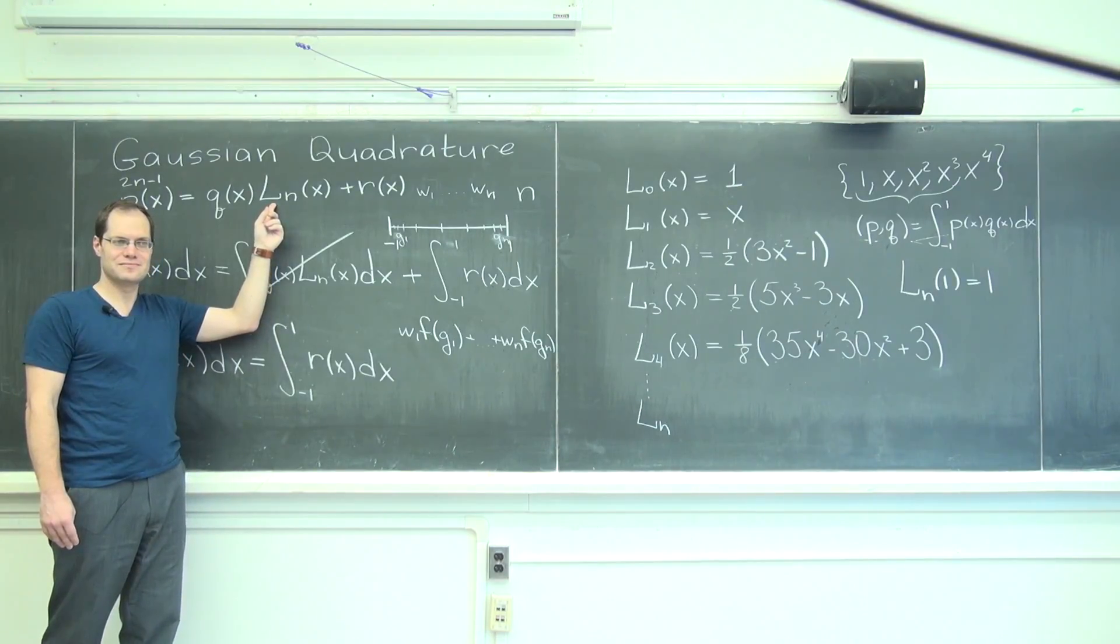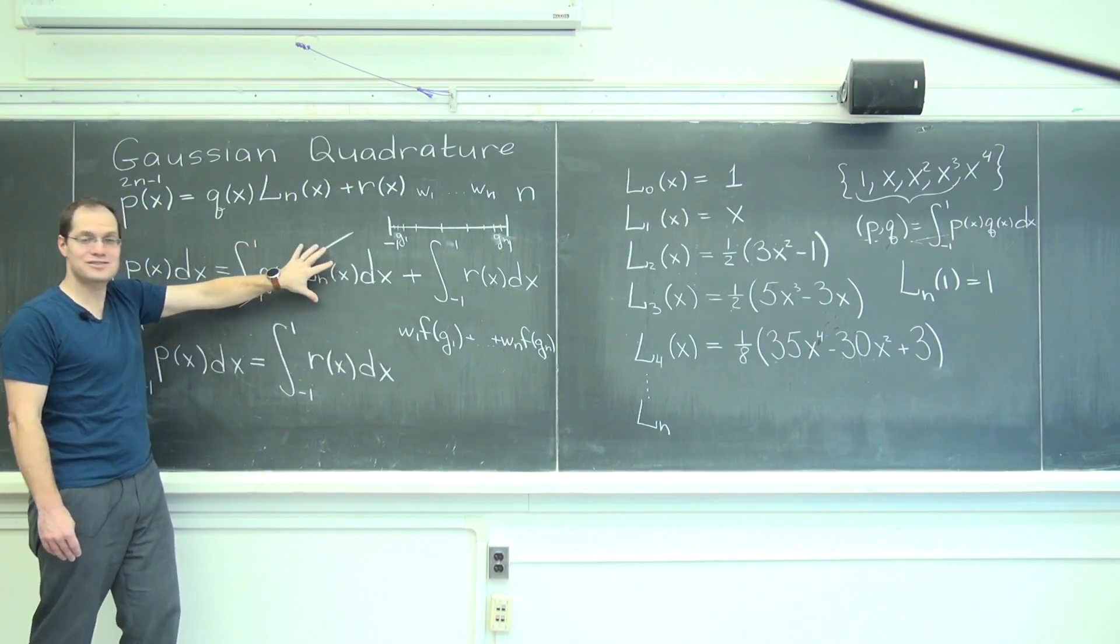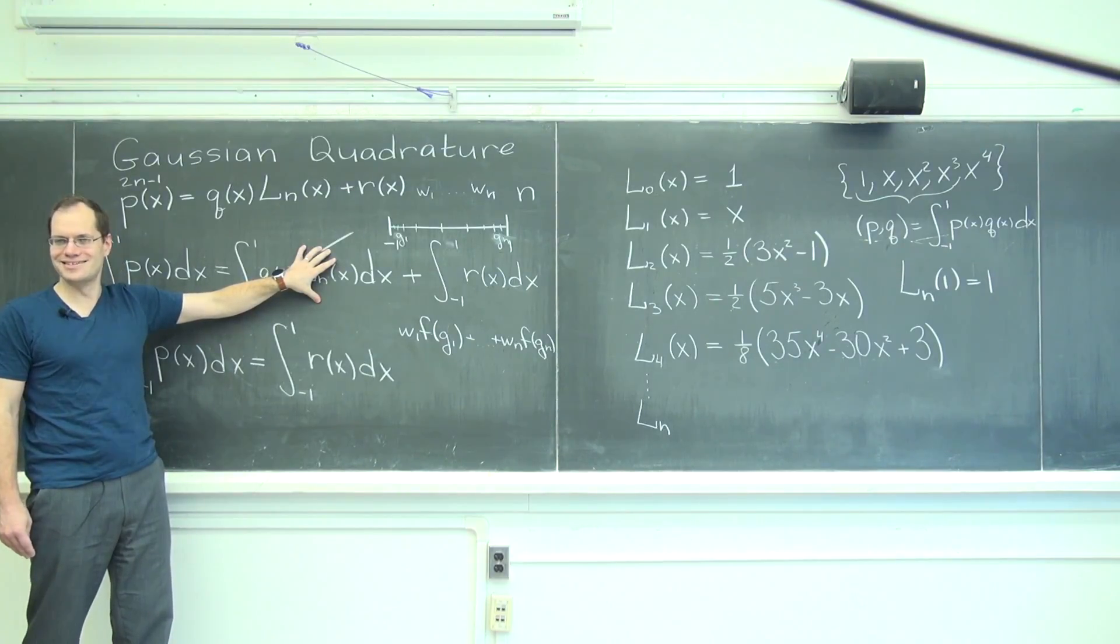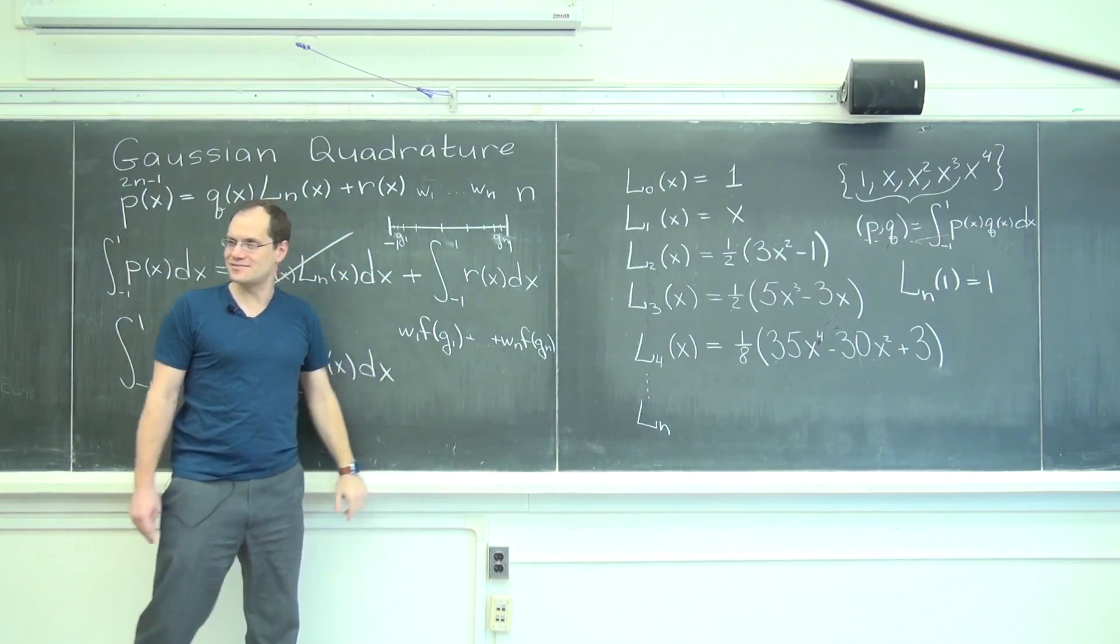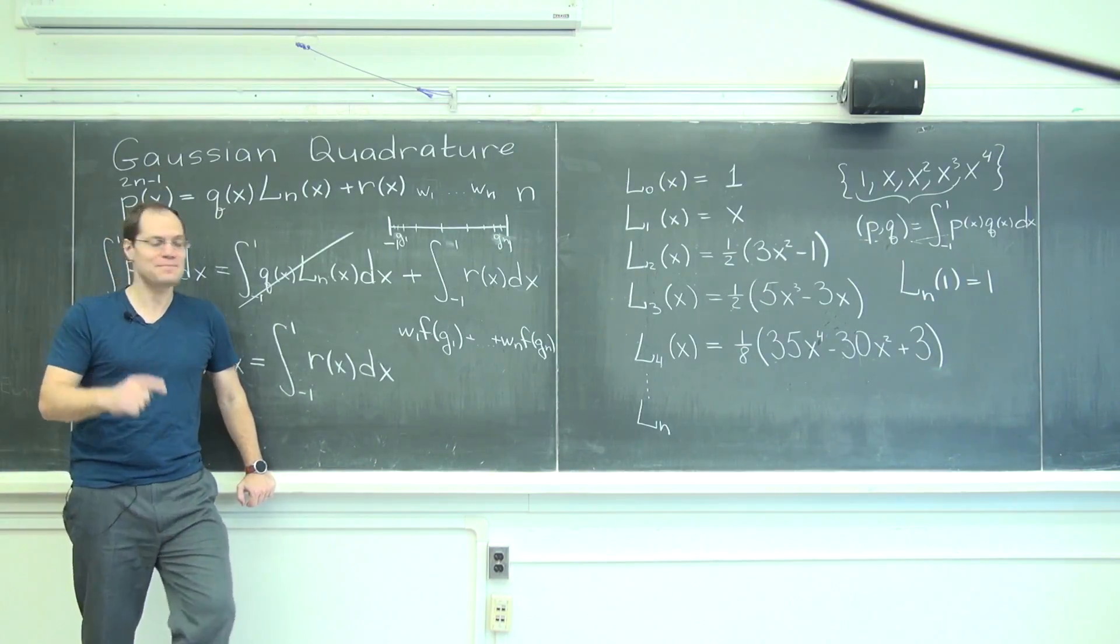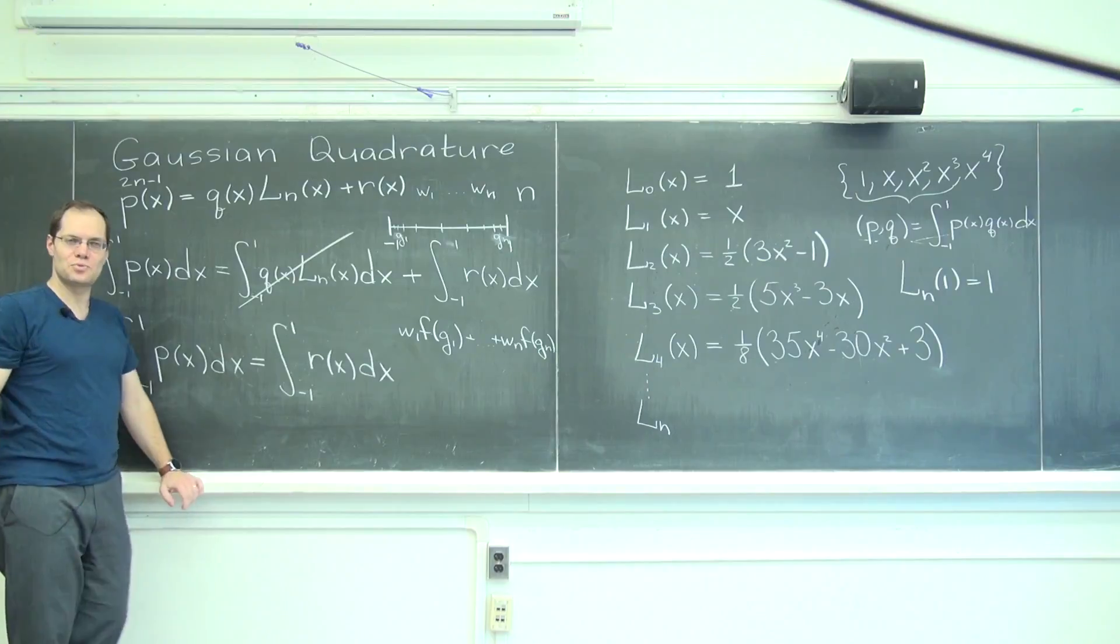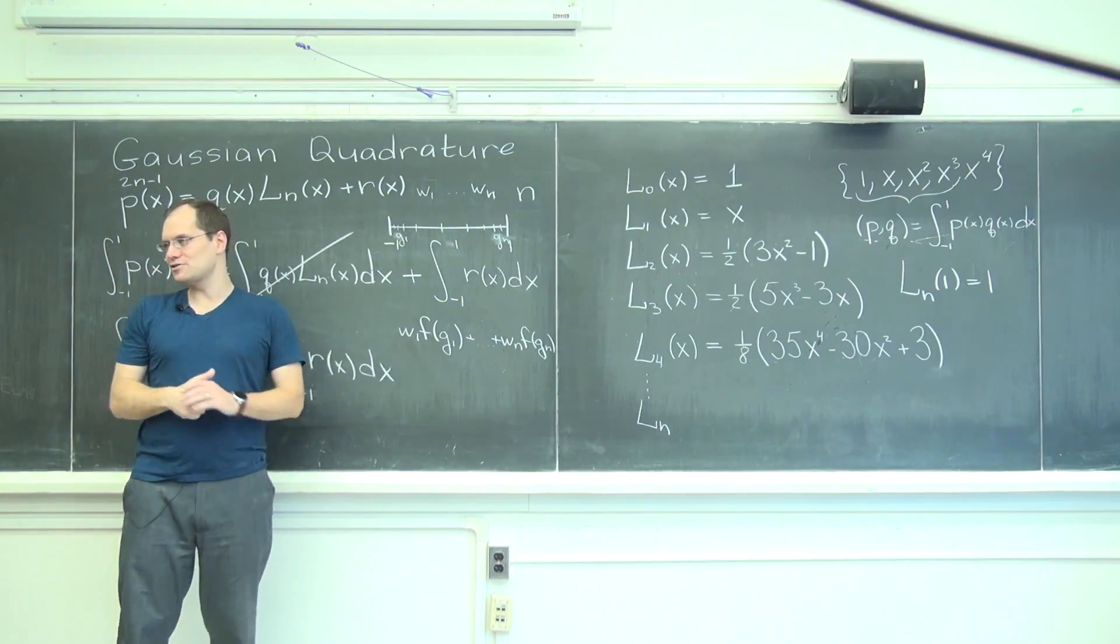So that will vanish. So this part will evaluate to zero, which is actually the true value of this integral, which is also zero. And this will be evaluated exactly because I chose my weights intelligently to match to be those exact weights that integrate polynomials of degree up to n exactly. And that means that according to this scheme, any polynomial of degree 2n minus 1 is evaluated exactly. And that's the triumph of Gaussian quadrature.